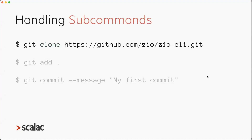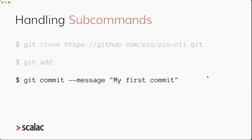We also have subcommands. Besides all of those cases for options and arguments, you also need to handle subcommands. For example, Git has several subcommands like clone, add, or commit. Each of those subcommands has its own set of options and arguments, so that's another level of complexity we need to consider.